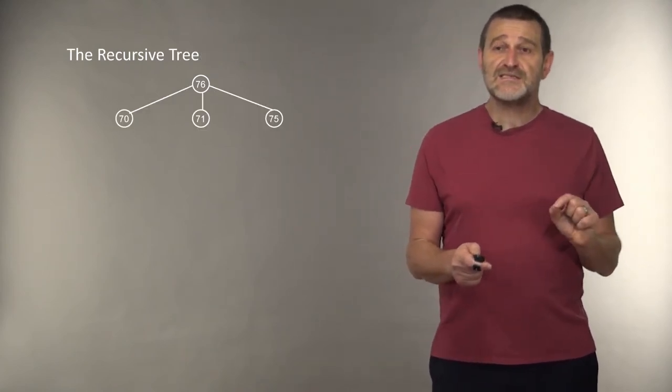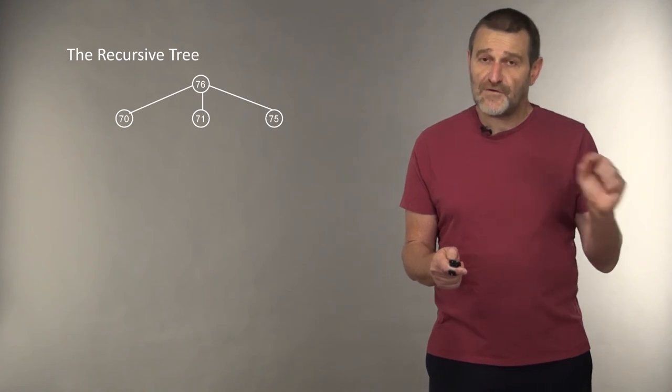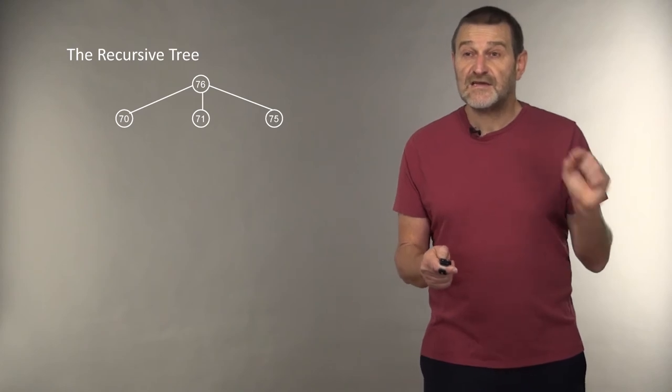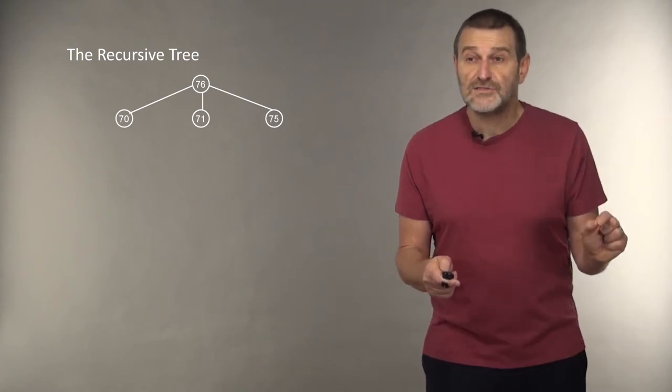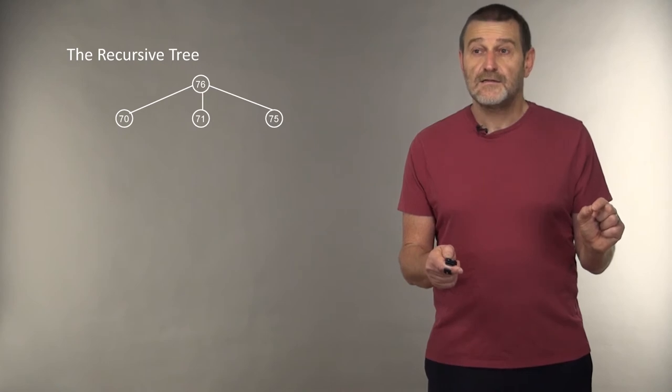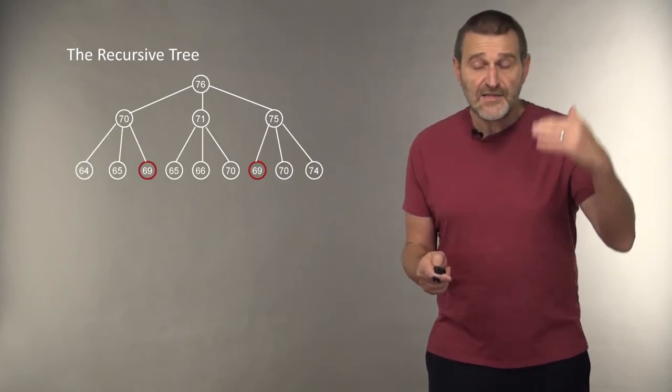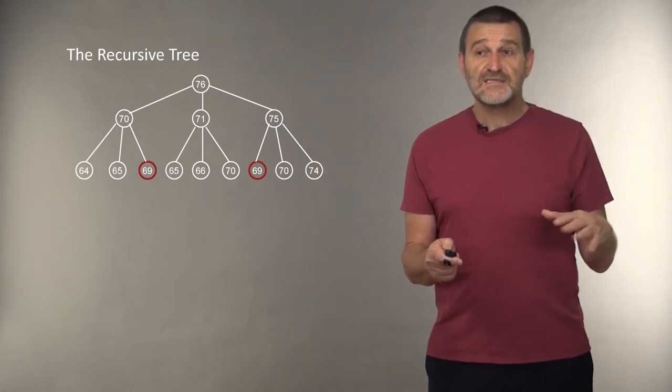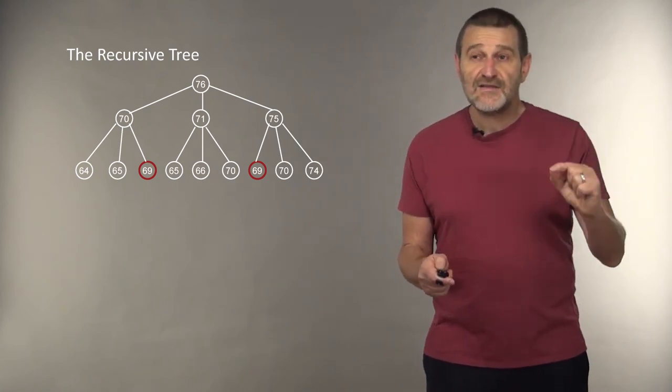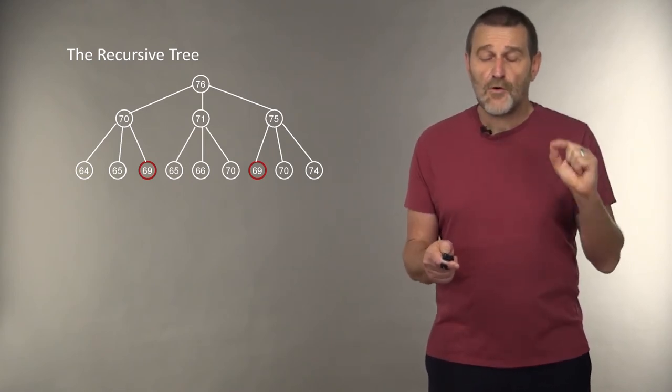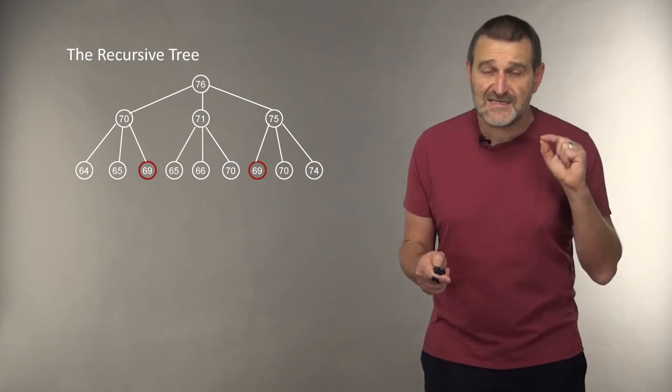Let's start from $0.76 and see how our algorithm works. To compute the change for $0.76, we need to compute first the change for $0.70, $0.71, $0.72, and $0.75. And we continue this way recursively, and we see that to compute $0.76, we actually need to compute the optimal amount of change for $0.69 twice.